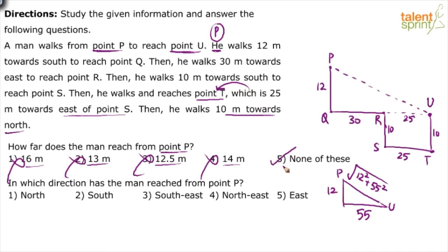I am sure all of you have got the right answer, fifth option, none of this. But what matters is how many of you have marked fifth option without doing the calculation? You know that 12 square is 144, 55 square will be 3025. 3025 plus 144 is 3169. Square root of 3169 will be somewhere around 56, 57. But is that needed? Is that calculation needed here? No. Answer is none of this straight because 16, 13, 12.5 and 14 are all out of the range.